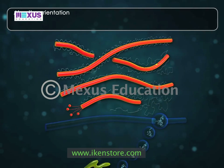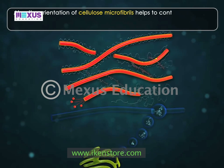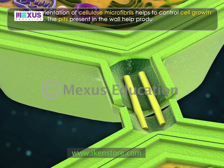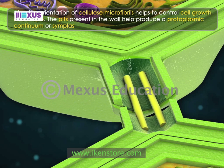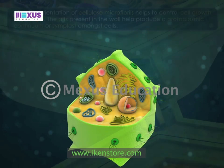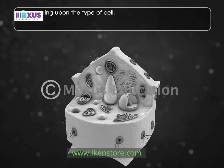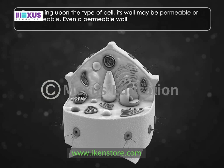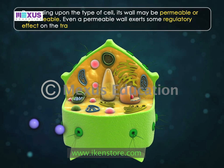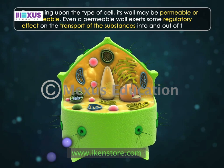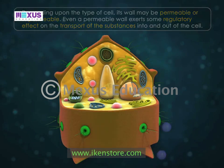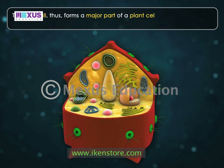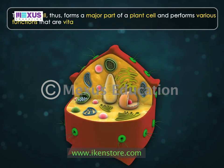The orientation of cellulose microfibrils helps to control cell growth and shape. The pits present in the wall help produce a protoplasmic continuum or symplast amongst cells. Depending upon the type of cell, its wall may be permeable or impermeable. Even a permeable wall exerts some regulatory effect on the transport of substances into and out of the cell. The cell wall thus forms a major part of a plant cell and performs various functions that are vital for its growth.